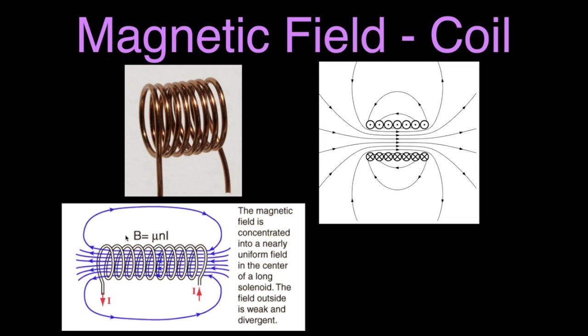This is the equation that we can use — we'll talk about the equation in just a moment. The description says: the magnetic field is concentrated into a nearly uniform field. As we often say, it's a homogeneous field inside that coil of wire, and it's a uniform field running along the center of the solenoid.